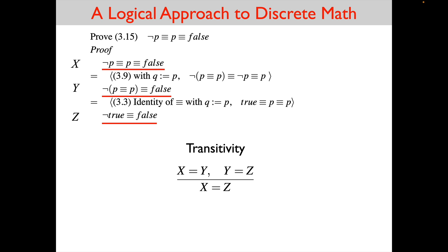Our implicit use of transitivity is as follows. Transitivity says: if x equals y in all states, and y equals z in all states, then x equals z in all states. In this example, x is the first line of our proof, y is the second line, and z is the third line, with hints in between. Because we showed x equals y in the first step and y equals z in the second, that tells us x equals z — and so on. That is the implicit use of transitivity in these proofs.